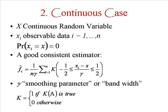This time, a consistent estimator can be written as f hat c, and it is equal to the following expression: 1 over n gamma times, again, the sum of the indicator function.